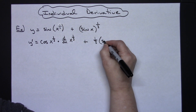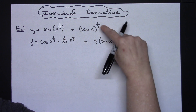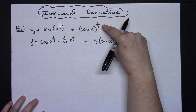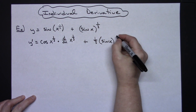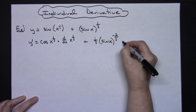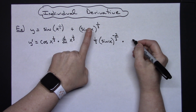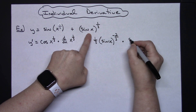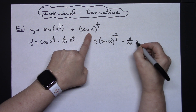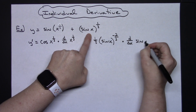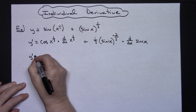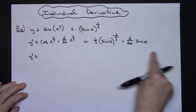Leaving the inside alone, I subtract 1 from the exponent: 1/3rd minus 1 gives me negative 2/3rds. Then times the derivative of the inside, again showing that d/dx notation — it'll be sine x.